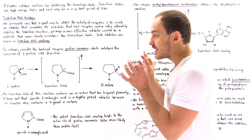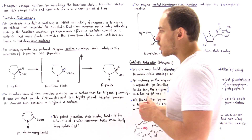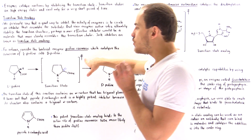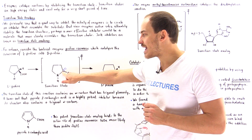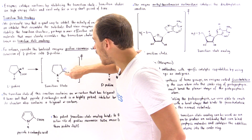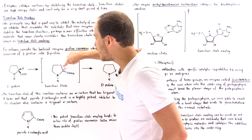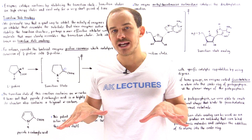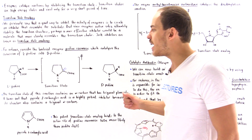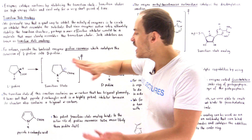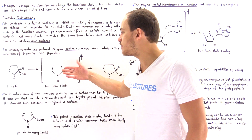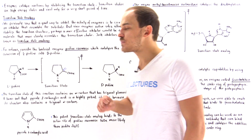If we examine the transition state when going from L-proline to D-proline, we can see the structure of that high-energy transition state. Notice that in this transition state, the alpha carbon atom is trigonal planar — these three covalent bonds all lie along the same plane. Because of this trigonal planarity, if the H atom is added on the top side, we form D-proline, but if the H atom is added from the bottom side, we form L-proline.